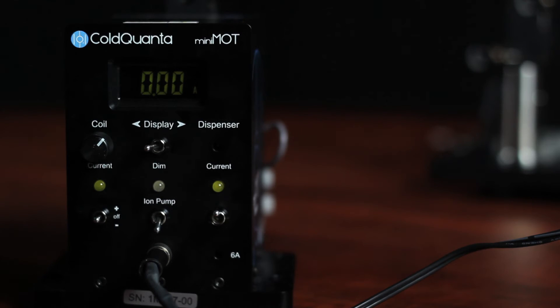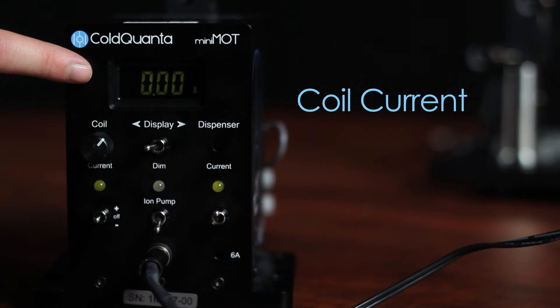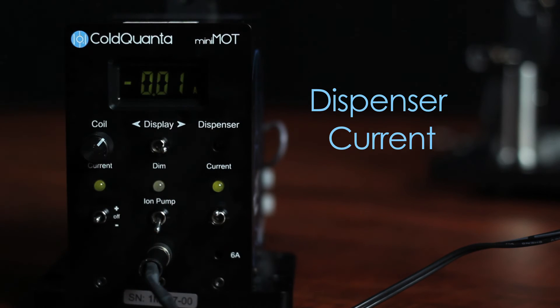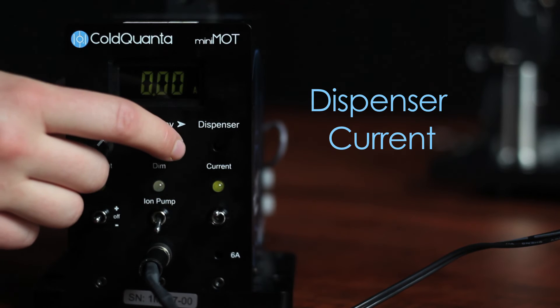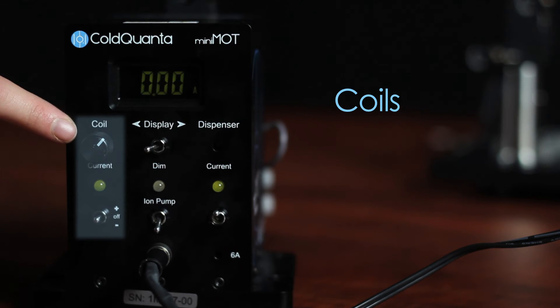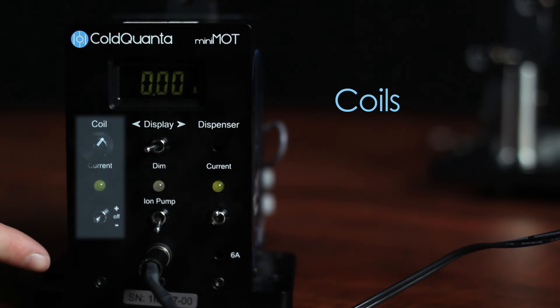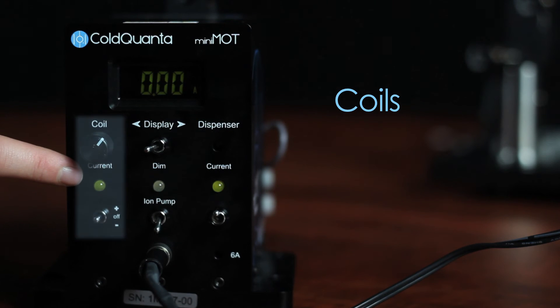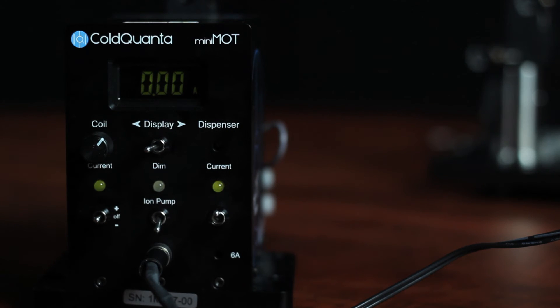On the rear panel of the Mini MOT, the display reads either the coil current with the switch toggled to the left, dispenser current when toggled to the right, or can be dimmed. To the left is the knob to adjust coil current. Below that, a switch turns the coils off, or on, in either direction, and a green light indicates the coils are on. Ultimately, the direction, positive or negative, will depend on the polarization of the beams, and you will determine this later.